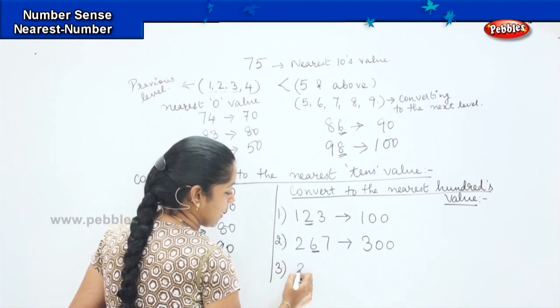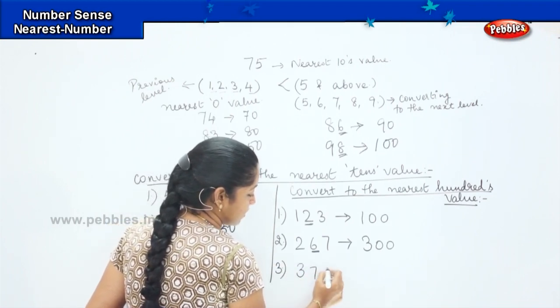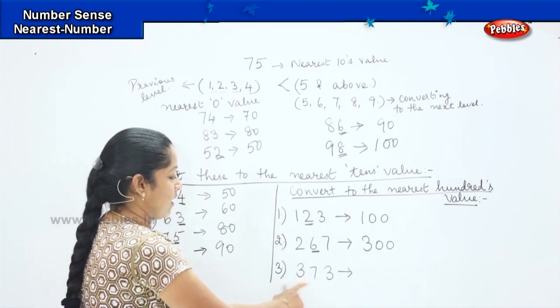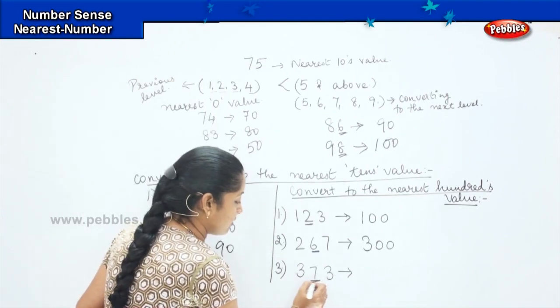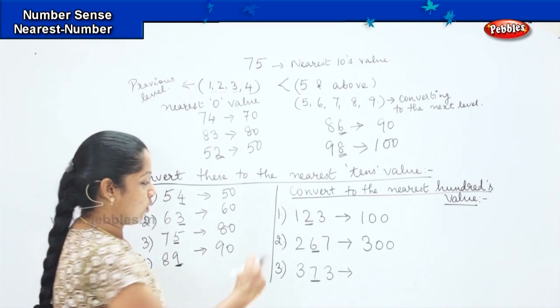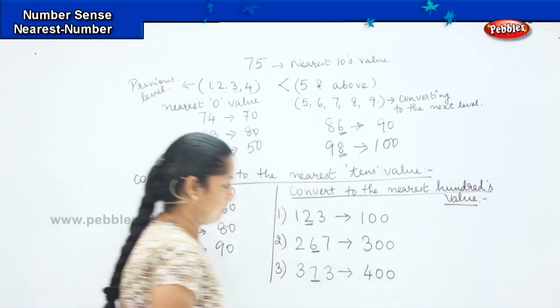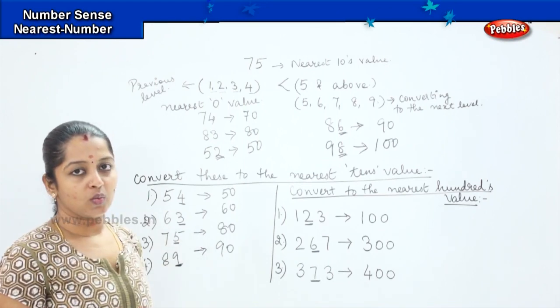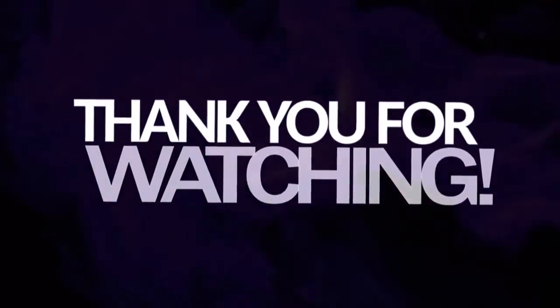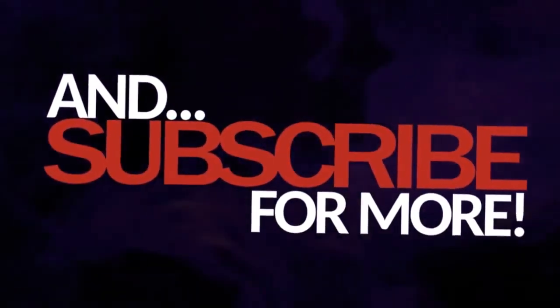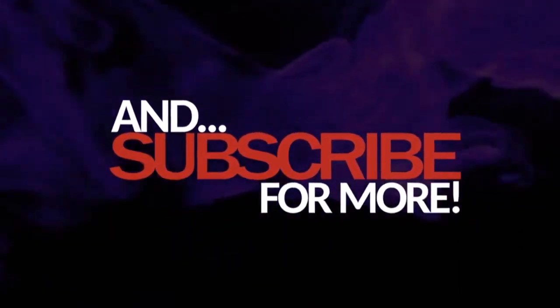Next, take 373. The hundreds digit is 3 and the tens digit is 7. Since 7 is greater than 5, we convert to the next hundreds — so 373 is rounded off as 400. Are you clear, children, with the nearest value and the conversion to the nearest tens and hundreds?